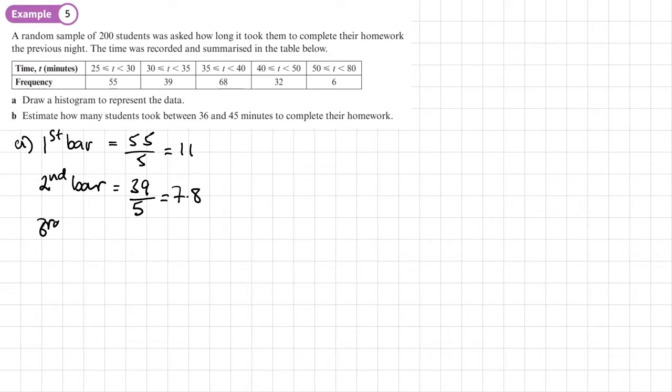Third bar. That has a frequency of 68, also a width of 5. So its frequency density is 13.6.